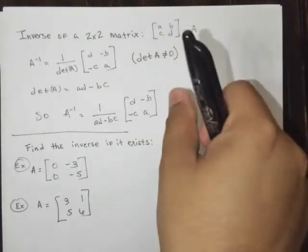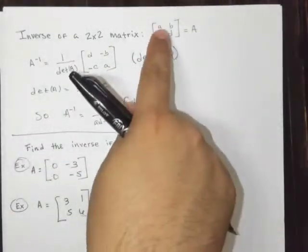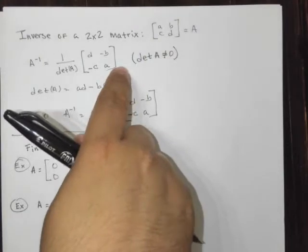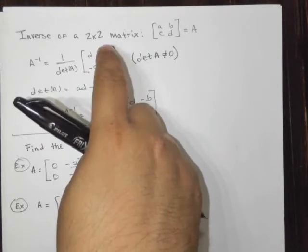But if it does have a determinant that's not zero, that's perfect. So what you do is you take A and D and you swap them. So D goes here, A goes there, and B and C you take the opposite sign of.